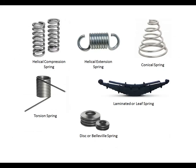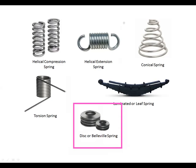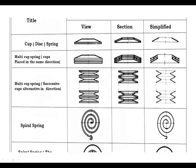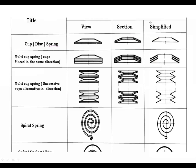These diagrams show: helical compression spring (3D view), helical extension spring, conical spring, torsion spring, lip spring, and disc or Belleville spring. The disc spring looks like this, and you have to draw its view. How to show a disc spring is given in the chart, and likewise you have to study all these types.